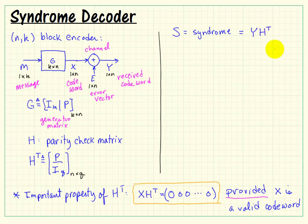So let's define this product X times H transpose as a syndrome. And now specifically, I want to look at the received codeword multiplied by this parity check matrix. So this is a 1 by N vector. Transpose of H is N by Q. Our syndrome, then, is a 1 by Q vector.